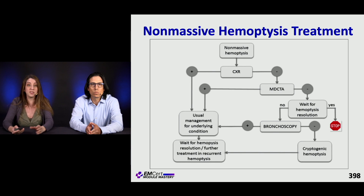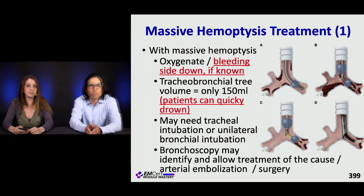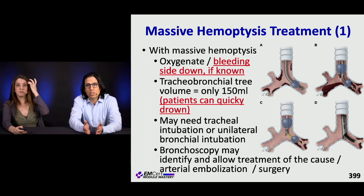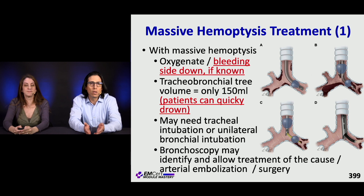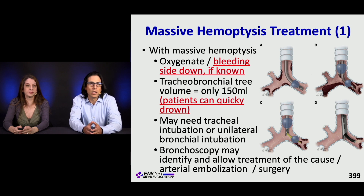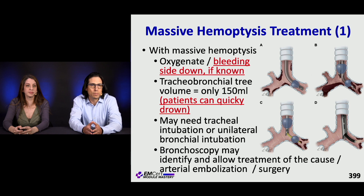Let's talk about massive hemoptysis. Massive hemoptysis is generally defined as greater than 50 ml per cough, 100 ml in an hour, or 600 ml in 24 hours — or if it scares you. If you're fearful of the amount, it's safe to say it's probably massive hemoptysis.